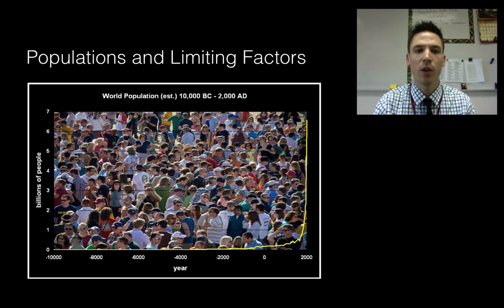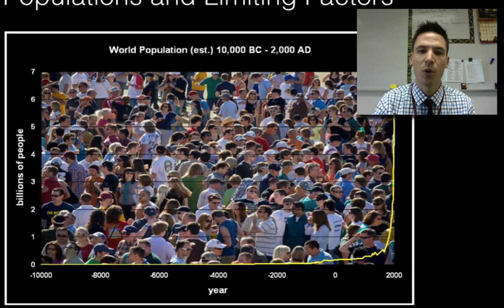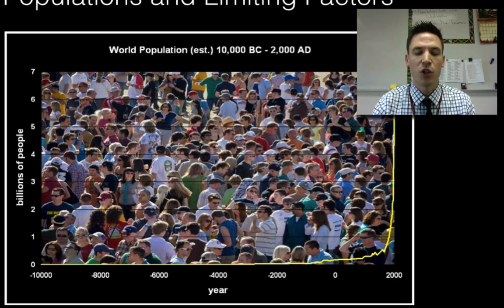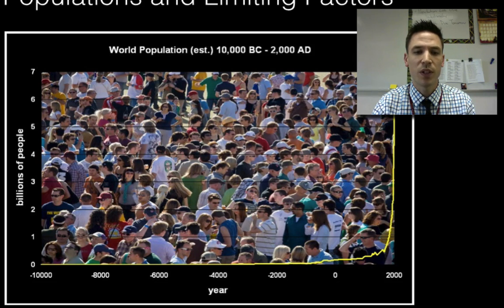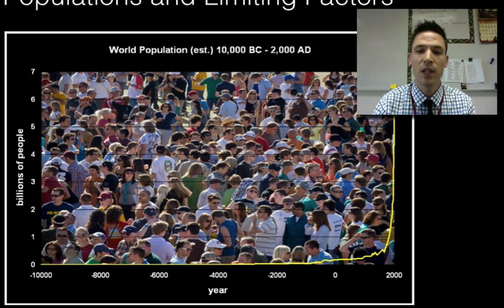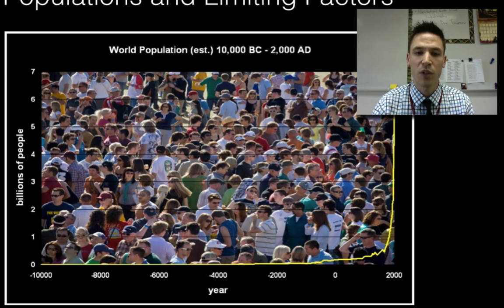To start this off, I wanted to take a quick look at human populations since we, after all, are humans and it's always interesting to take a look at ourselves. Here's a graph showing population growth over the last 12,000 years. One thing I want you to notice is if you look from about 10,000 BC up until about 2,000 years ago, our population remained pretty constant. It wasn't really increasing that fast.